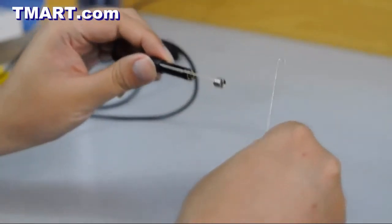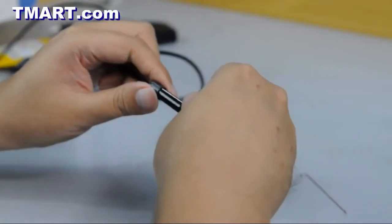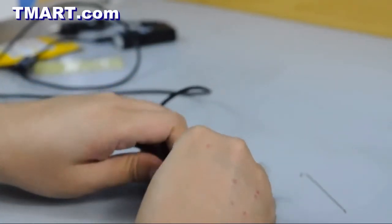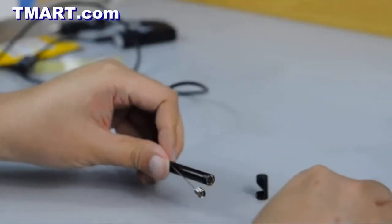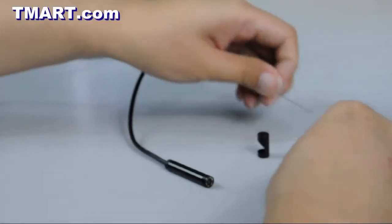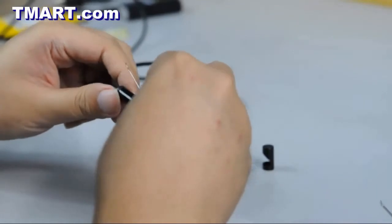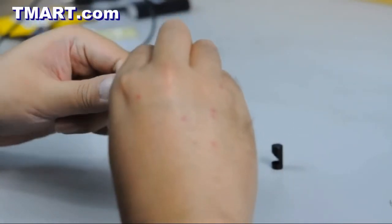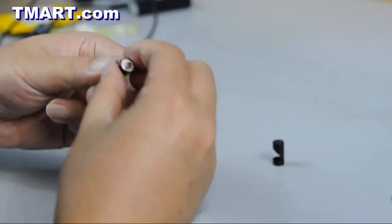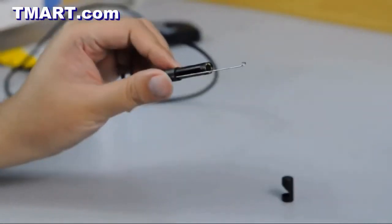Another attachment you have here is a metal hook. This can be used to pick up little objects.